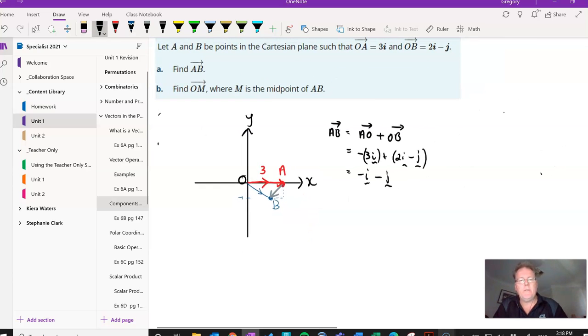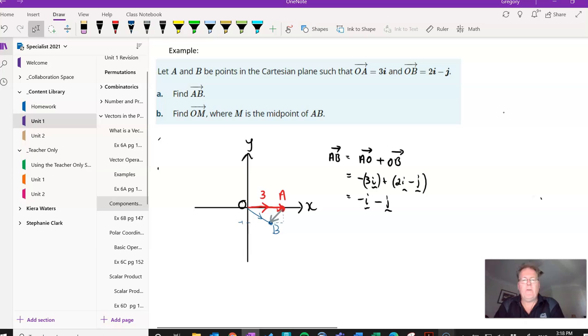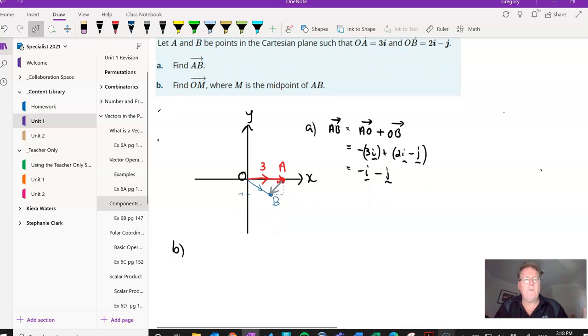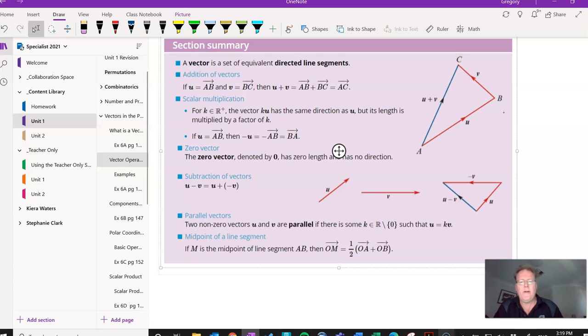So that's the first part of that question. Let's zoom back out again. And then if we look at question B, we can say to ourselves, we'll find OM, where M is the midpoint of A and B. So if we go back a little bit, we might remind ourselves what that is.